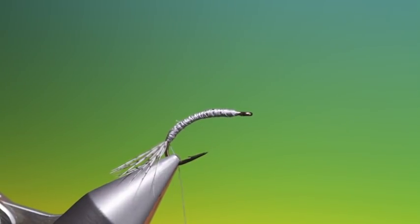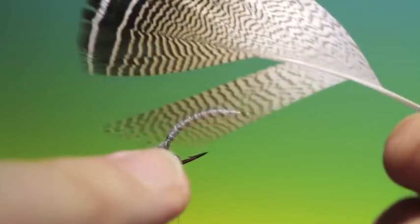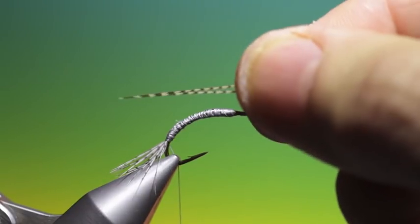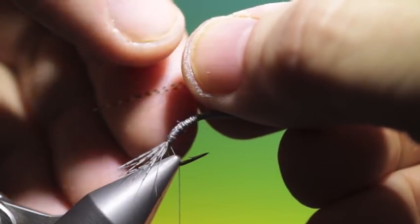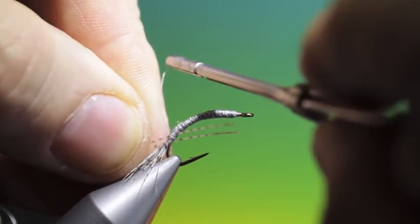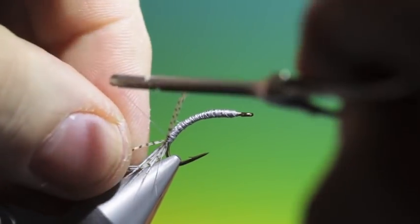And what we need is a, I use a barred wood duck here but I use these fibers without the barring on. So we just take two of these and we want these as the antenna. So let's go down here...